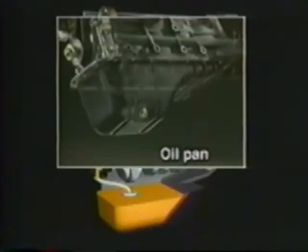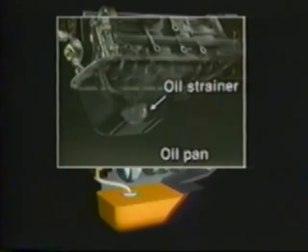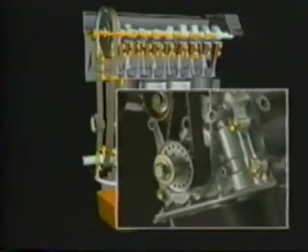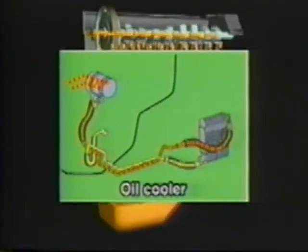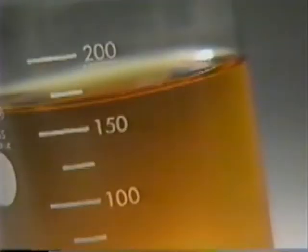The lubrication system is composed mainly of an oil pan to store engine oil, an oil pump to pressure feed the oil to various parts of the engine, an oil filter to remove impurities from the oil, and an oil cooler. The lubrication system supplies engine oil to each part of the engine so as to form an oil film on part surfaces, thereby minimizing friction and wear. Parts thus lubricated rotate or slide smoothly, enabling optimal engine performance.